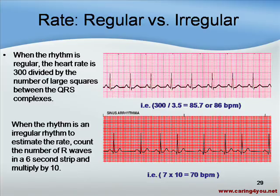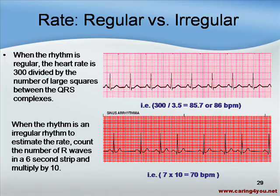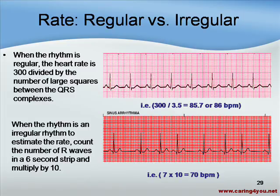When the rhythm is irregular, to estimate the rate you count the number of R waves in a 6-second strip and multiply by 10. In this strip we have 7 R complexes, so 7 times 10 equals 70 beats per minute. Note that we actually have 8 R's, but that last R on the end of the strip is outside of the 6-second boundary. You only count what is within the notch-to-notch 6-second interval.